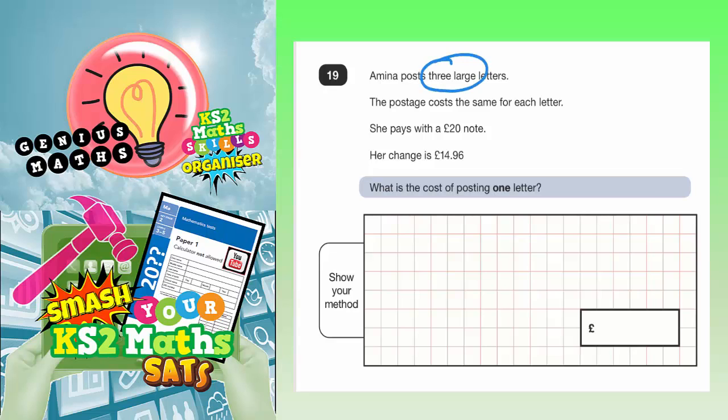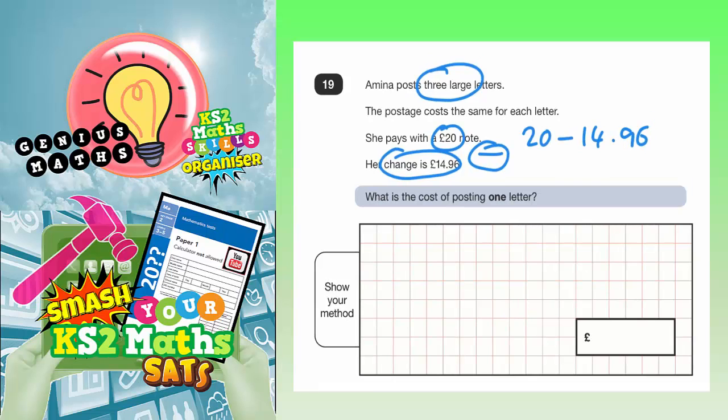Well, because she got £14.96 change, if we subtract that from £20, we'll be able to figure out how much she actually paid for all three large letters. So, £20 take away £14.96.